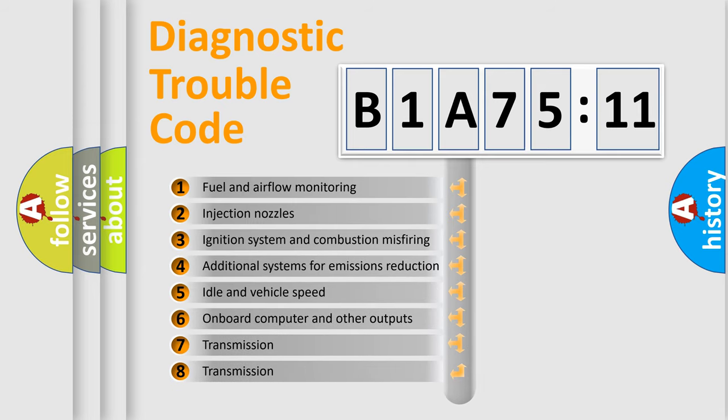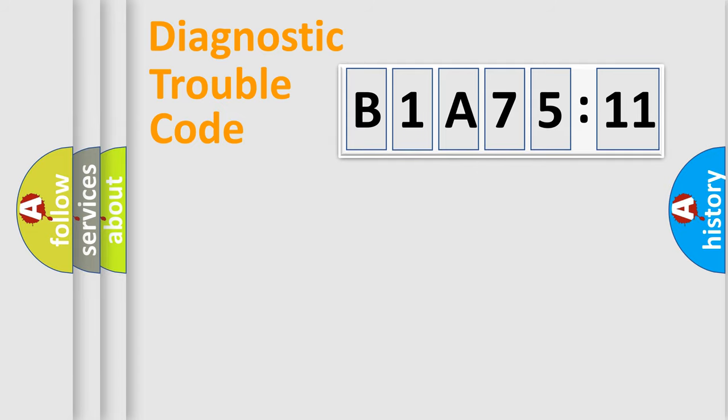The third character specifies a subset of errors. The distribution shown is valid only for the standardized DTC code. Only the last two characters define the specific fault of the group.